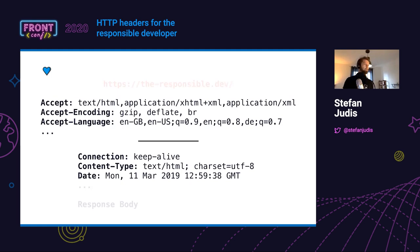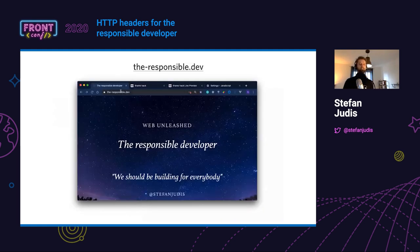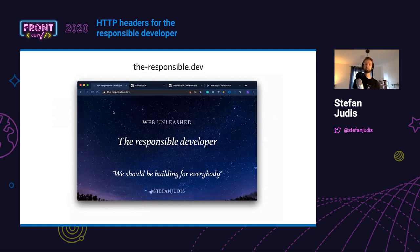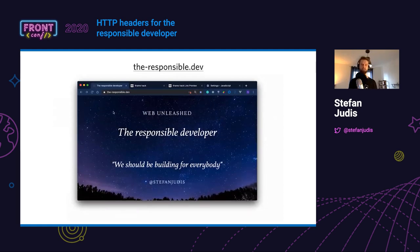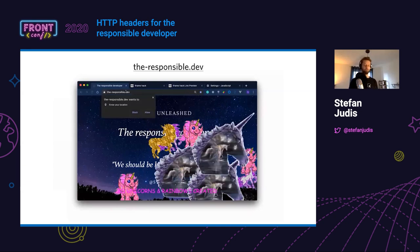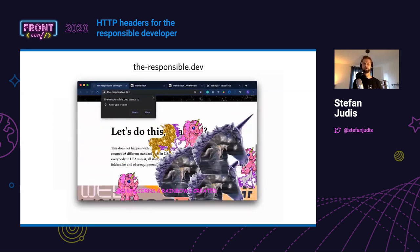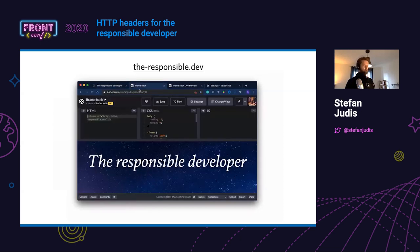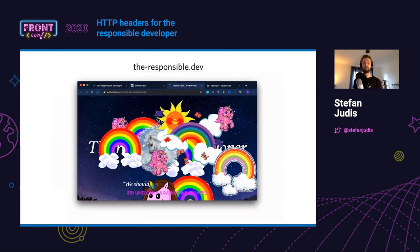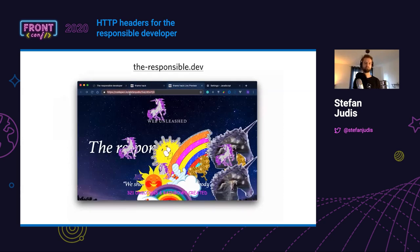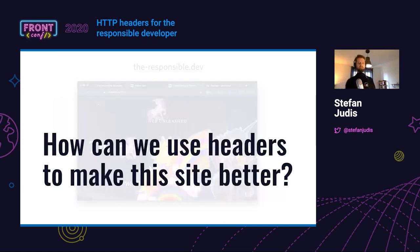A few months ago it was trending to buy a .dev domain, so that's what I did — you can see the responsible.dev. It's a website without much in there, but JavaScript is disabled. When we enable JavaScript and reload, you see a permission dialog popping up, unicorns appear from somewhere, and you can also go to CodePen — an online code editor — and frame this site in an iframe to pretend to be responsible.dev, potentially tracking clicks and doing malicious stuff. So I asked myself: how can we use HTTP headers to make this site better without touching any source code?